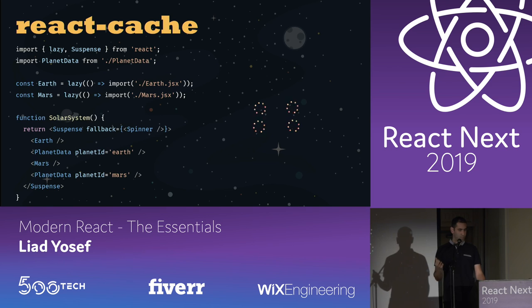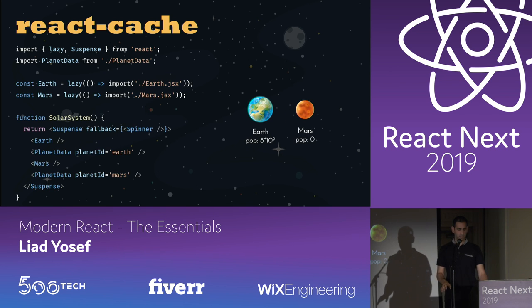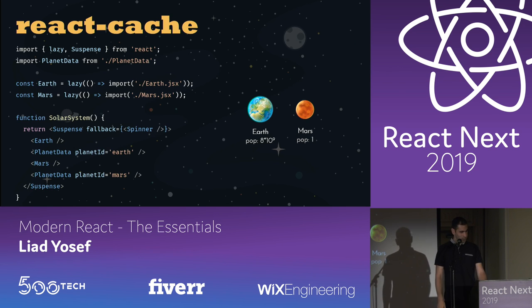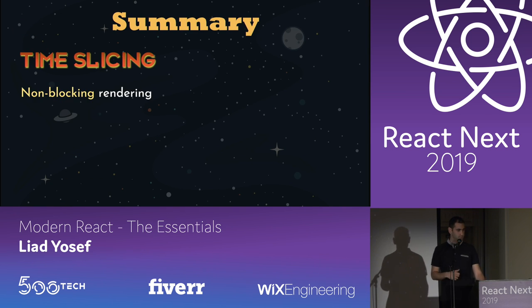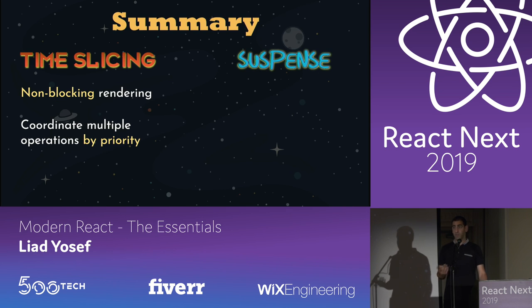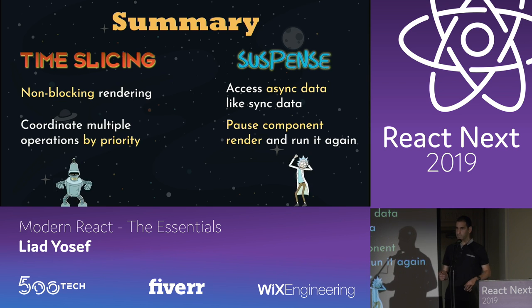To sum up suspense: time slicing is a way to do non-blocking rendering and coordinate multiple operations by priority. Suspense is a way to access async data or async components, pause component render, and then run it again. Let's talk about hooks.